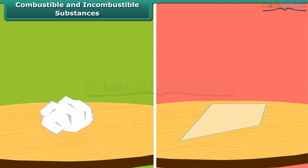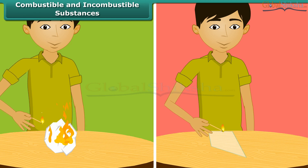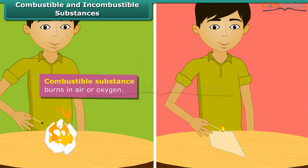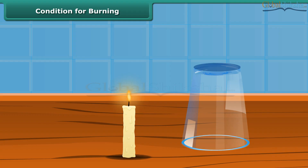Some substances catch fire and burn, while others do not catch fire. The boy is bringing a lighted matchstick close to paper and glass. Paper catches fire and so it is called a combustible substance. Glass does not burn — substances which cannot burn in air or oxygen are called incombustible substances. Let us discuss the conditions necessary for burning.